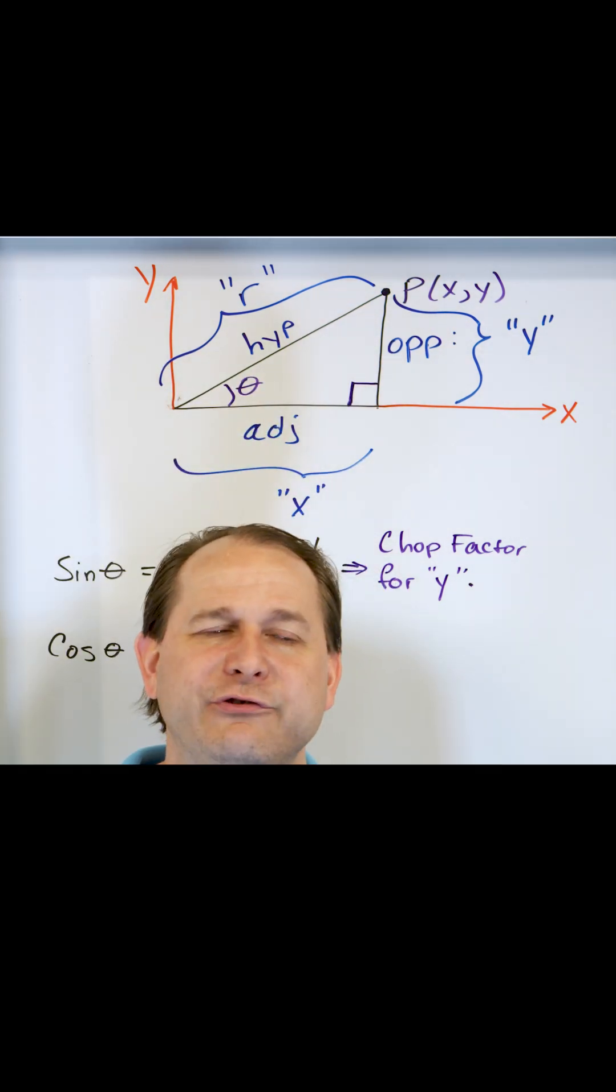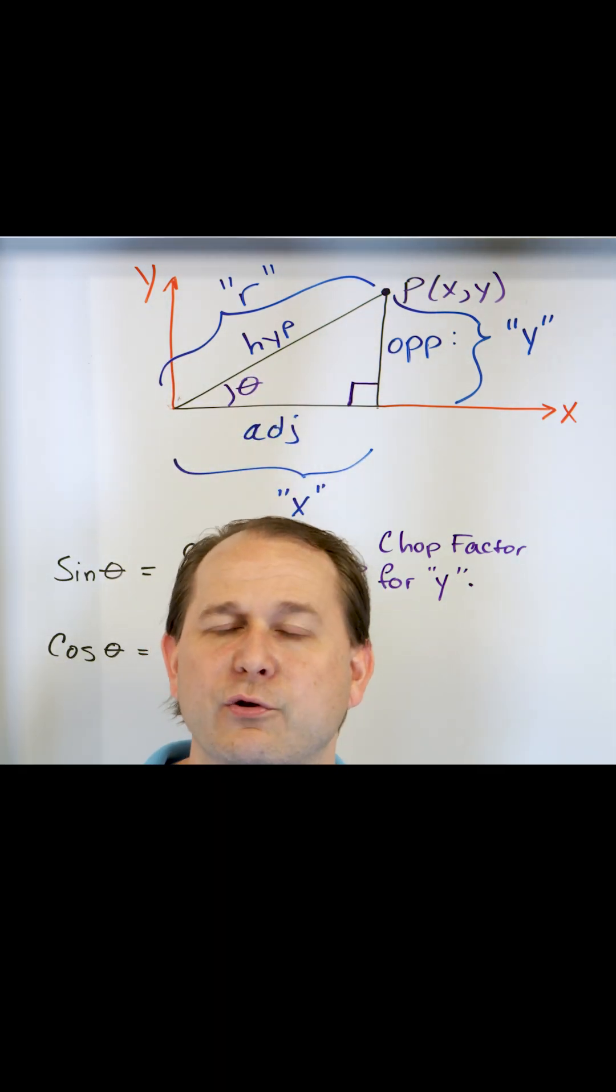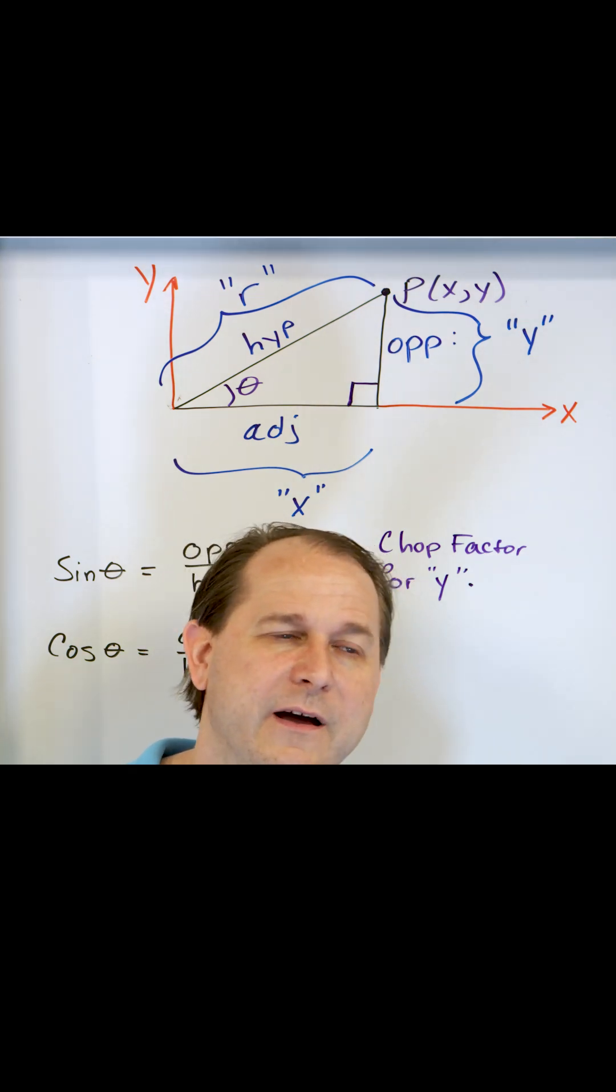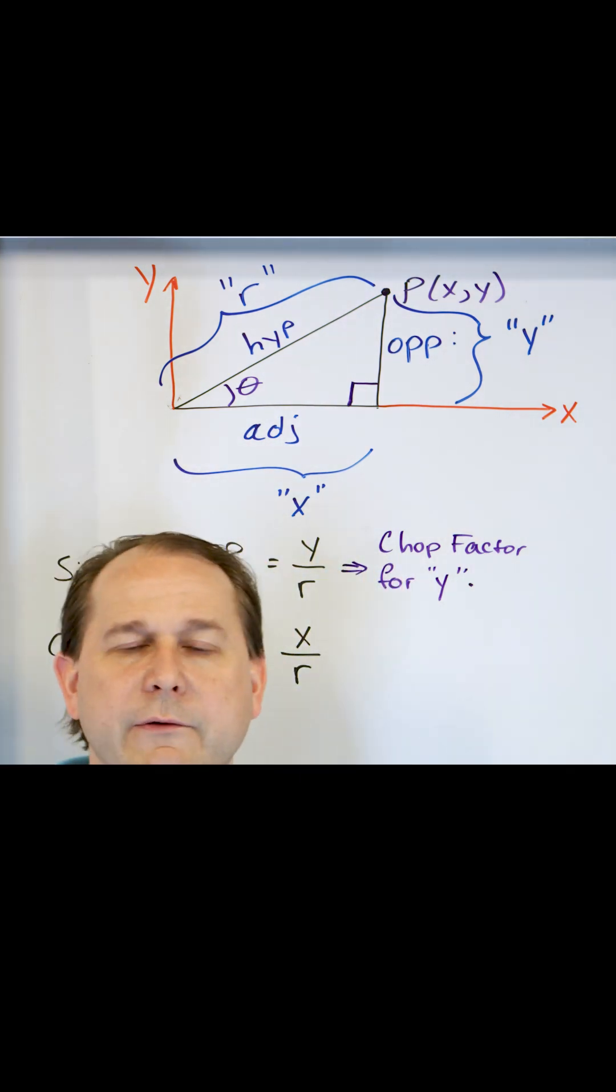But sine basically tells you how much of the triangle is going in the vertical direction. And if you have a very small chop factor in the y direction, it means that that's not the case. And the similar thing for here.